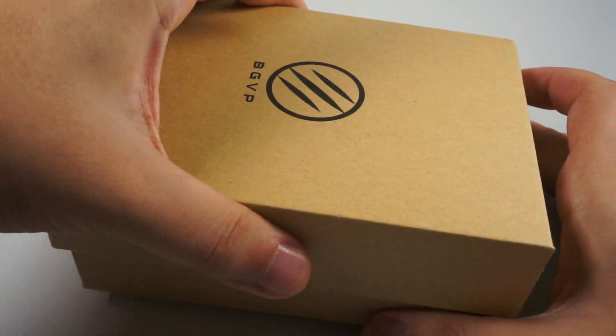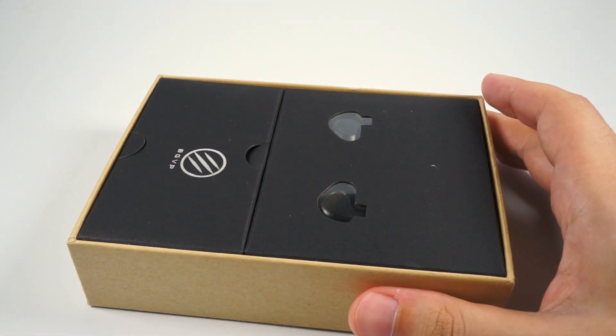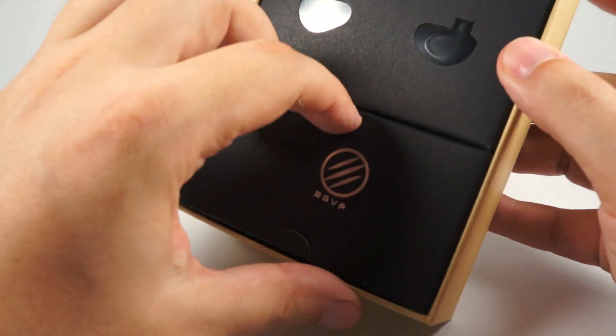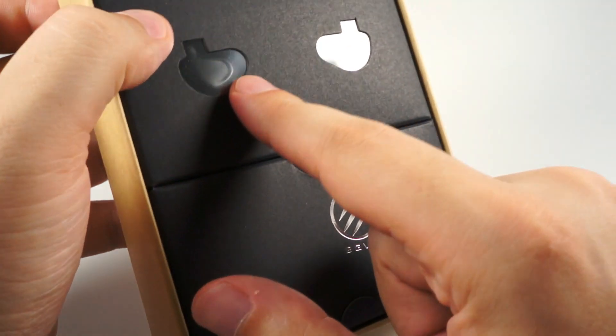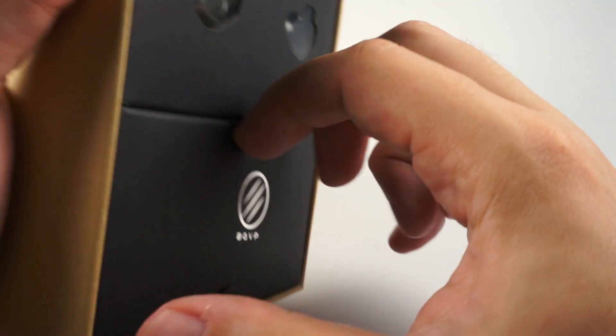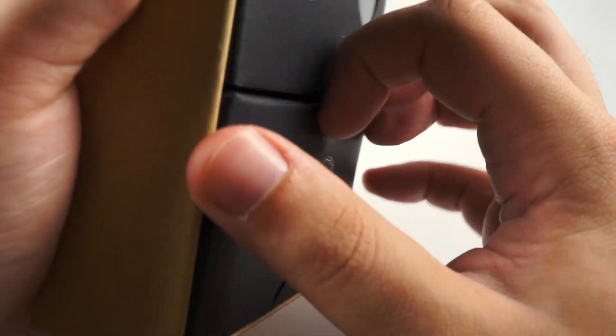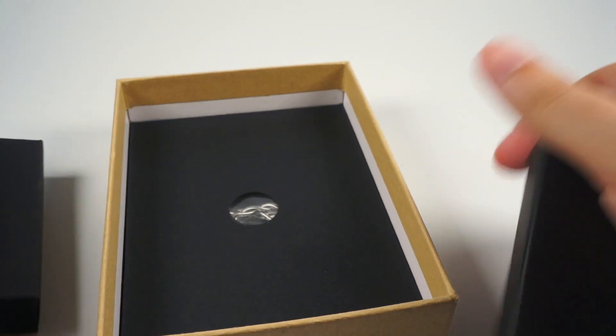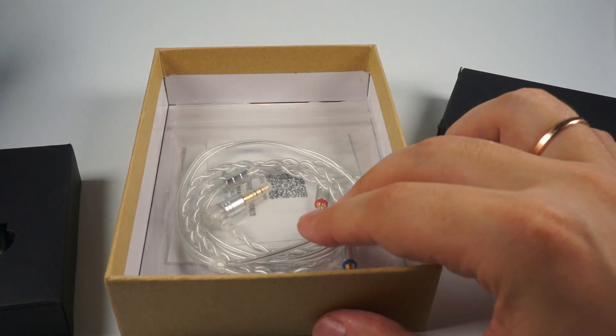The inner part is made of recycled cardboard, so probably BGVP cares about our planet, or maybe they don't. Inside, they put the IEMs into another separate box, so let me unpack it all. There are a lot of stuff in the accessory set.